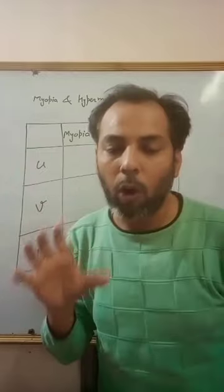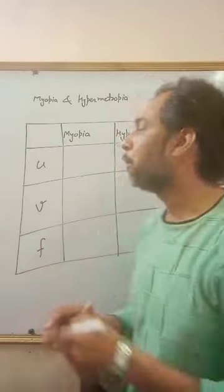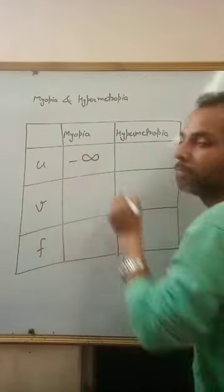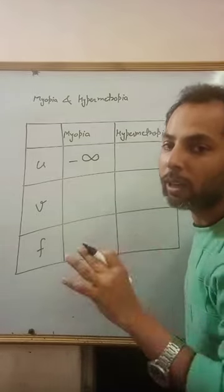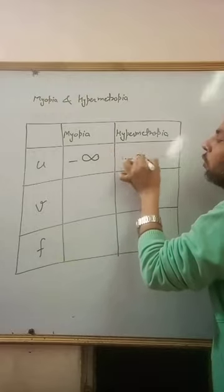So if you look at a normal eye, it can see to infinity distance. So here it will be infinity. And for hypermetropia, a normal eye's near distance, it can see clearly at 25cm. So here it will be minus 25cm.